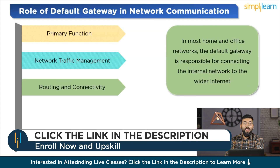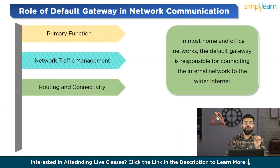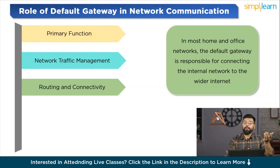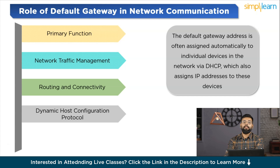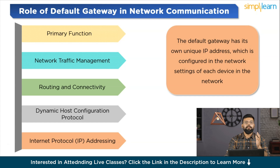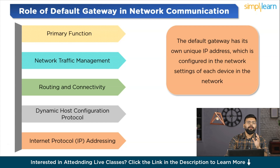Next is routing and connectivity: in most home and office networks, the default gateway is responsible for connecting the internal network to the wider internet. Without a default gateway, computers in a local network can communicate with each other but cannot access outside networks. The next role is DHCP — Dynamic Host Configuration Protocol: the default gateway address is often assigned automatically to individual devices via DHCP, which also assigns IP addresses to those devices. Finally, internet protocol addressing: the default gateway has its own unique IP address, configured in the network settings of each device, used to direct outgoing traffic and receive incoming traffic from outside the network.